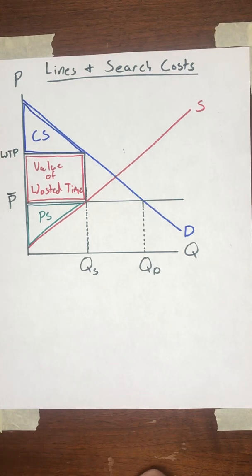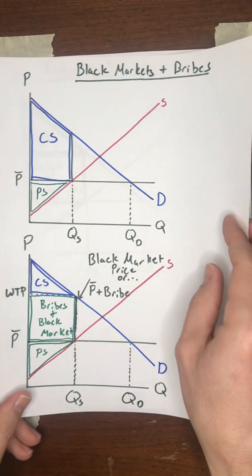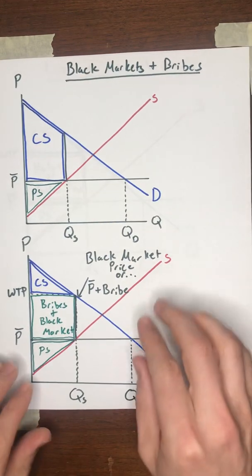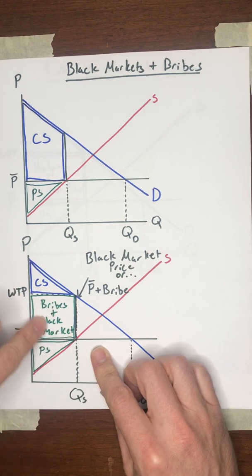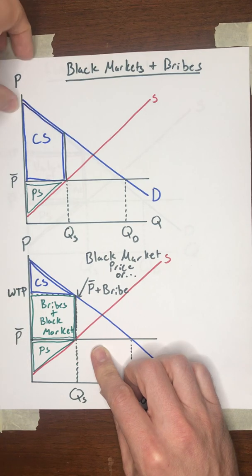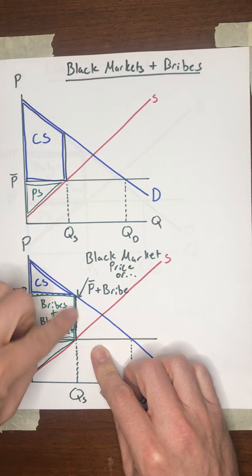And why is that? With black markets and bribes, notice that the producers capture this area, but at least somebody gets it. Somebody is able to get this surplus.